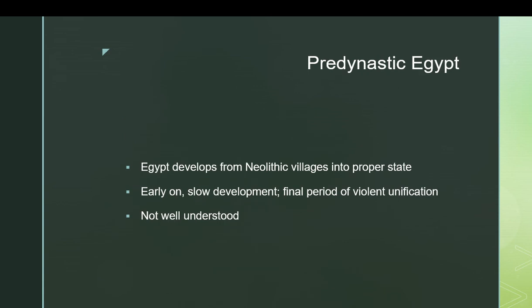Pre-dynastic Egypt was the period where Egypt developed from Neolithic villages — the kind of thing going on in many areas of the world at the time — into a proper state, a kingdom. Early on you had the slow developmental patterns of the Neolithic: villages, small gatherings with maybe a hundred people practicing basic animal and plant agriculture. These coalesced very slowly, got larger over time, and a few centers developed — places like Nechen in the south and Butoh in the north.